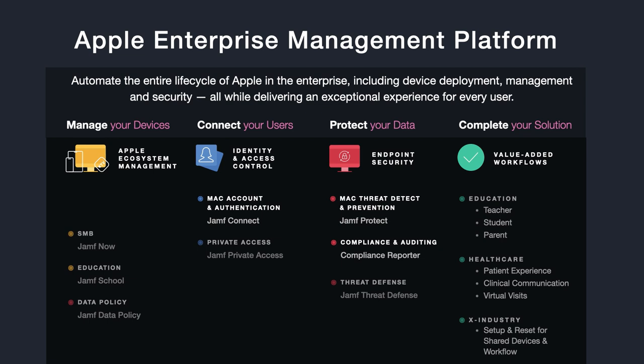The third piece is Jamf Connect. It allows you to utilize your cloud identity provider to create accounts, authenticate, and synchronize passwords on your Mac. This gives a security team the ability to track user information to a device, control what type of authentication is required — like biometrics — and can enforce MFA. The number one security problem for organizations today is stolen login credentials. Jamf Connect can sync passwords with Okta or Azure, and even allow passwordless authentication using Jamf Unlock — letting users use Touch ID or Face ID on their mobile device to unlock a computer. Even if a user's password is compromised, the IDP would be able to track logins and leave a trail.